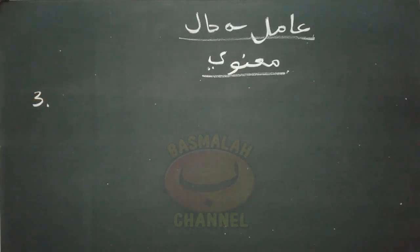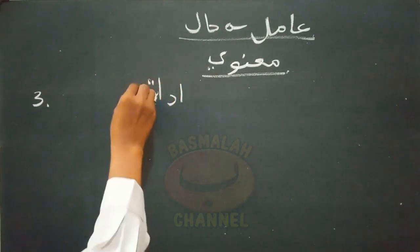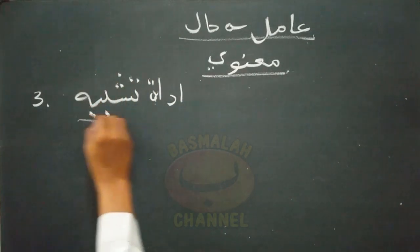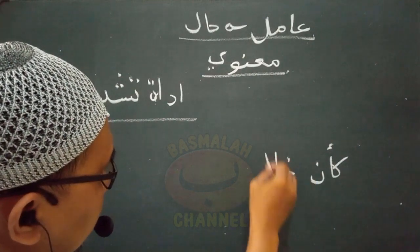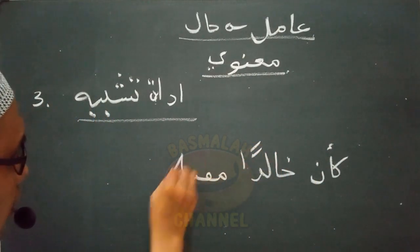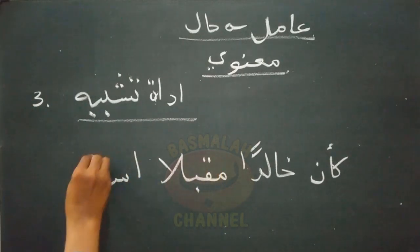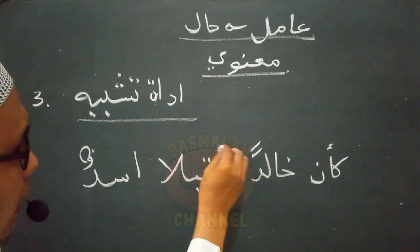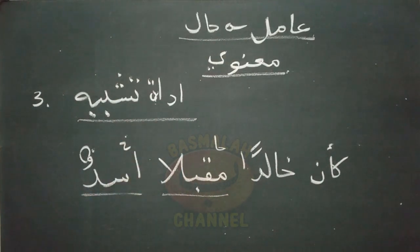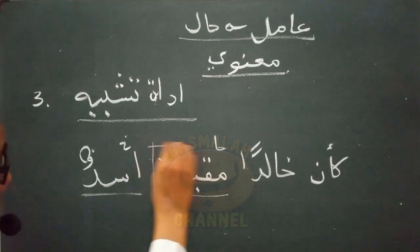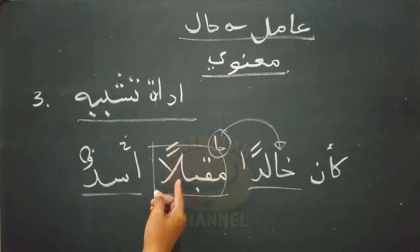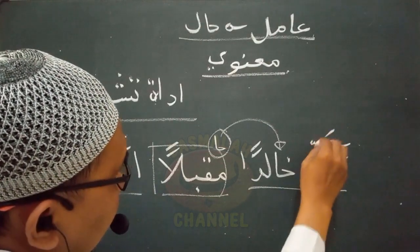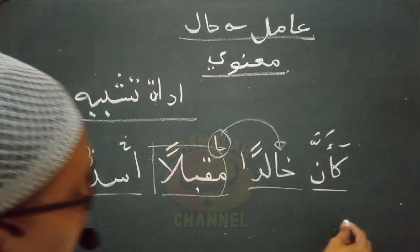Kemudian yang ketiga berupa adat tashbih, yaitu alat-alat untuk menyerupakan. Contohnya 'ka'ana kholidan mukbilan asadun' - seolah-olah kholid dalam keadaan menghadap ialah seekor singa. Kholid itu seakan-akan bagaikan singa ketika dia menghadap. Lafat mukbilan adalah hal yang menjelaskan keadaan dari lafat kholidan sebagai sahibul halnya, wajib nasob, dan yang menasobkan adalah adat tashbih yaitu lafat ka'ana. Takdirannya adalah yushbihu - menyerupai.